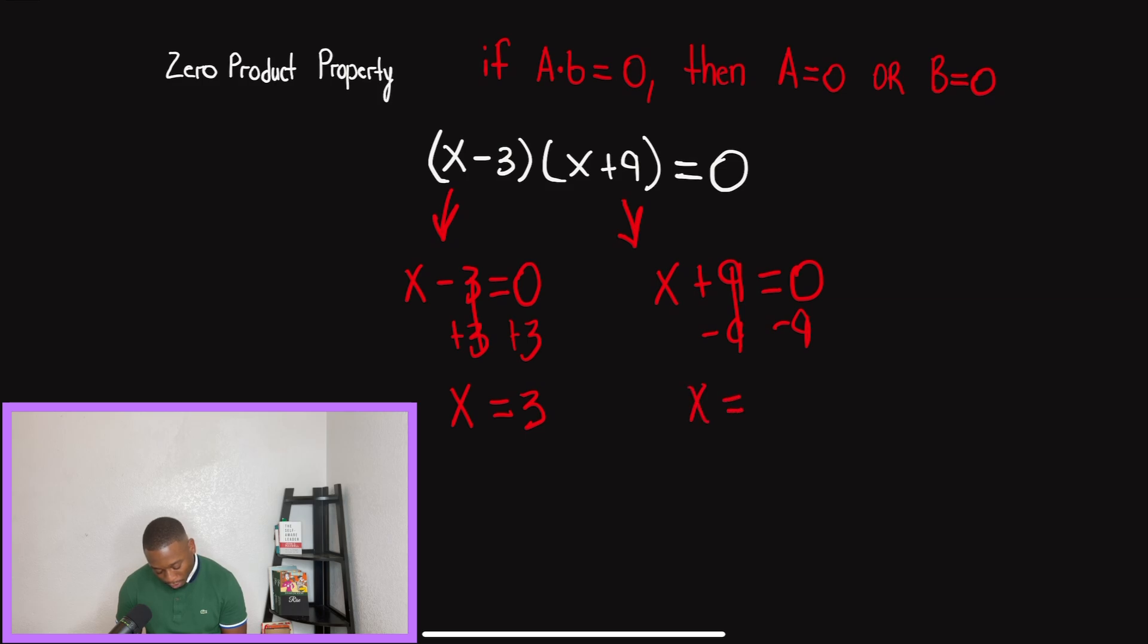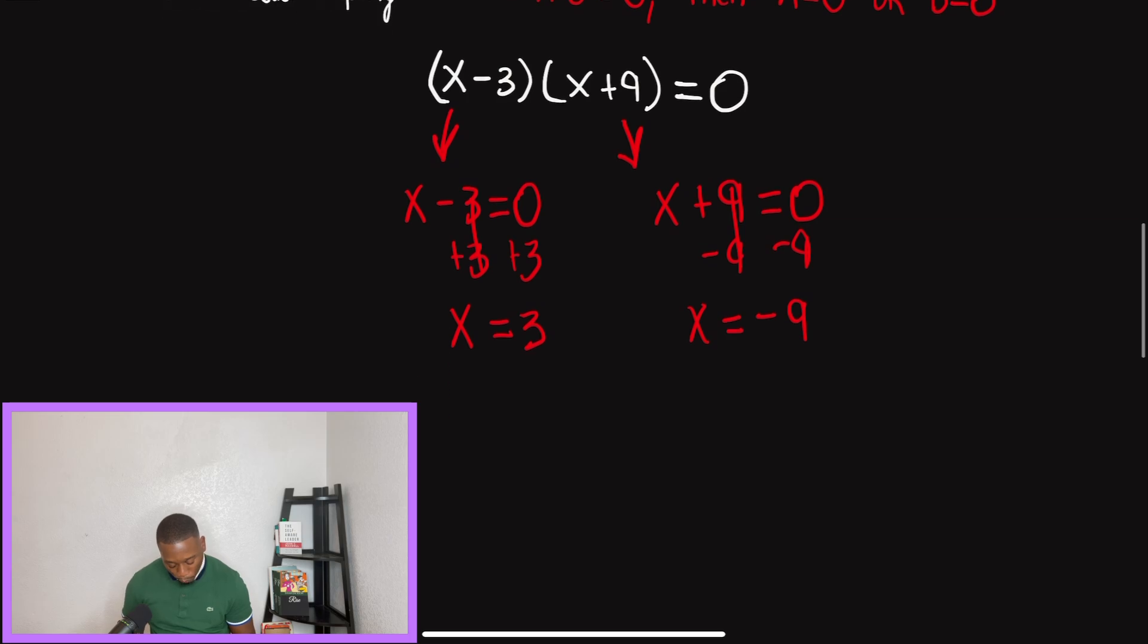Typically, we'll express it as a solution set. So we'll put it in some braces, and then we'd have it from least to greatest order, using a comma to separate each of our answers. So this is a quick example of zero product property.